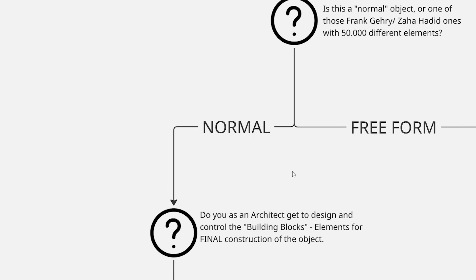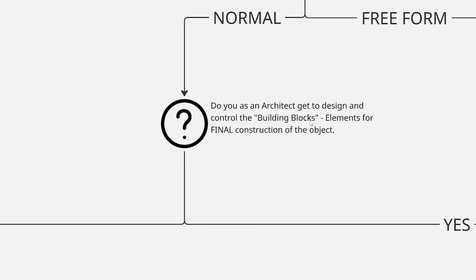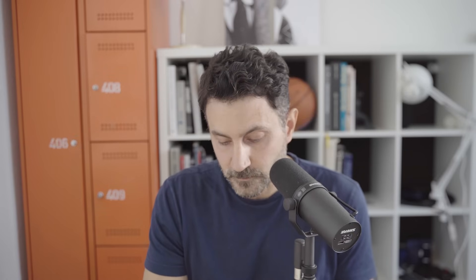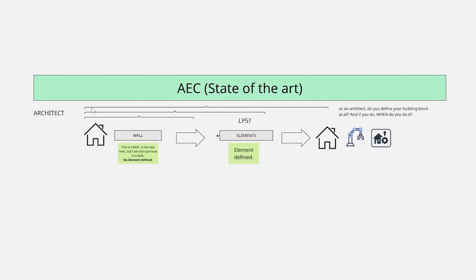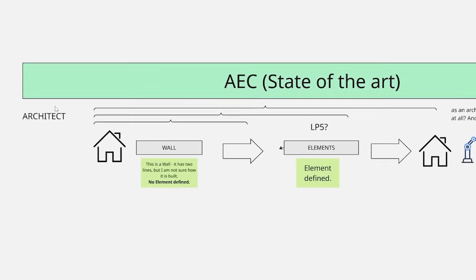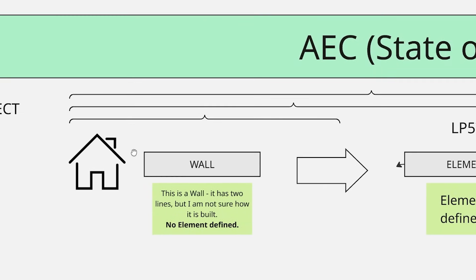The question is: do you, as an architect, get to design and control the building blocks — the elements for the final construction of the object? I want to address what I think is the normal standard way to design today, which I'm trying to disrupt. If I design a house and I'm in the first stages and I draw a wall, that wall has two lines, but I'm not sure how it's built — no element is defined yet.